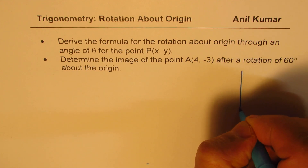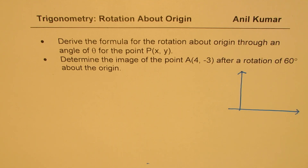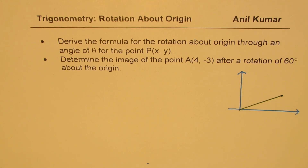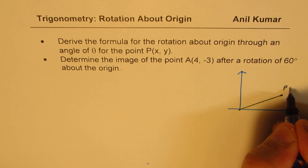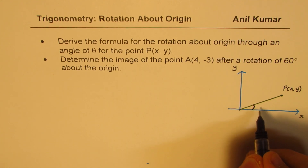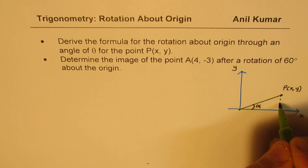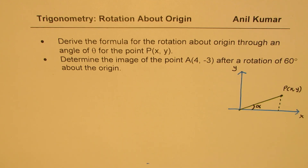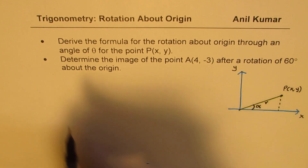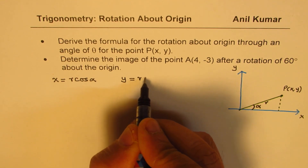So let's first understand the basic concept. We'll take a general point in coordinate — let us say the point is P(x, y). So if this angle here is alpha, the horizontal component x is equal to r·cos(alpha), where r is this length. We can write x = r·cos(alpha) and y = r·sin(alpha).